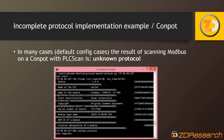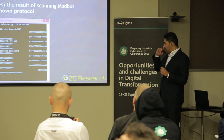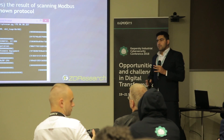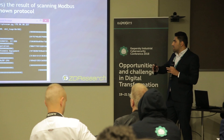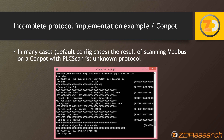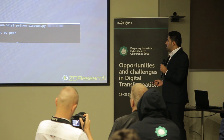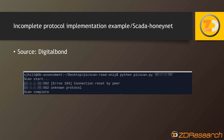Here is another example showing how to find honeypots by checking for incomplete protocol implementation. Sometimes it is much easier — there are tools designed for scanning industrial control systems that can communicate with industrial protocols, but because protocols are often implemented incompletely in honeypots, the result reveals the honeypot. Here is another example with Scylla HoneyNet by DigitalBond.